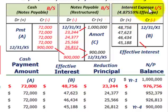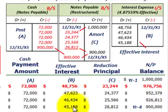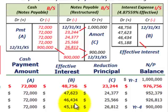For interest expense on the income statement — that's the effective interest at 4.87559%. We debit (increase) interest expense: starting at $48,756 in year one, decreasing to $45,188 in the final year. Total effective interest expense is $188,000. So we've recognized interest expense on the income statement at the new effective interest rate.